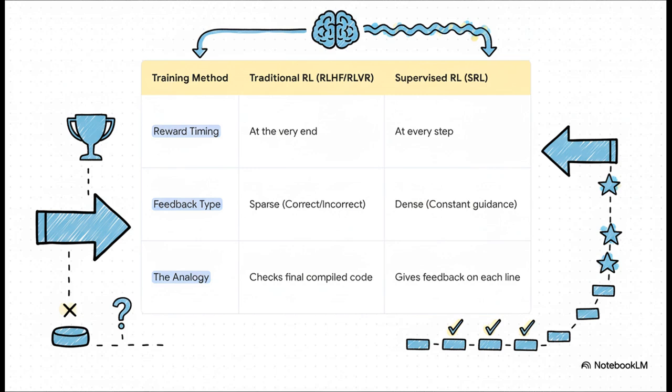The old way, using methods like RLHF, you get one single reward at the very end. That's what we mean by sparse. The analogy here is just spot on. It's like trying to teach someone how to code by only telling them if their final program works or not, with zero feedback on the actual code they wrote.